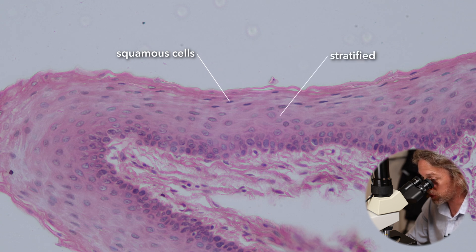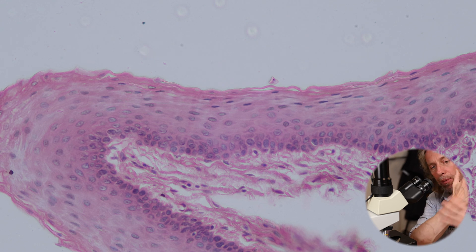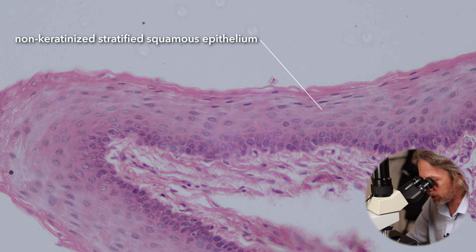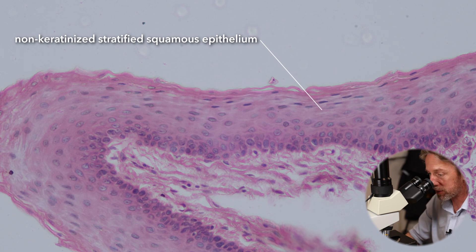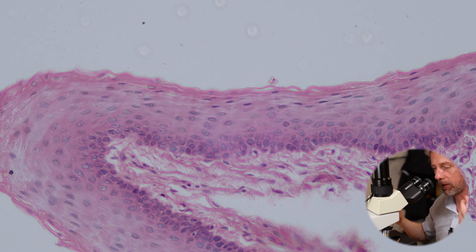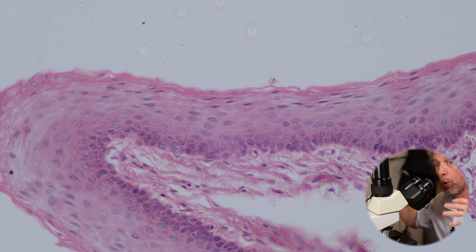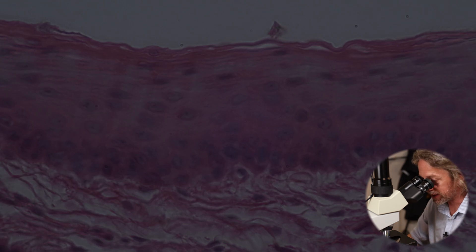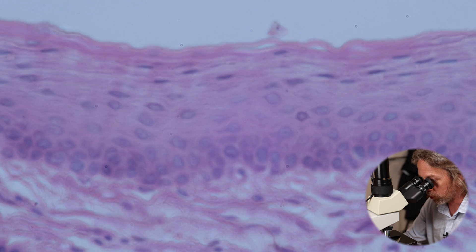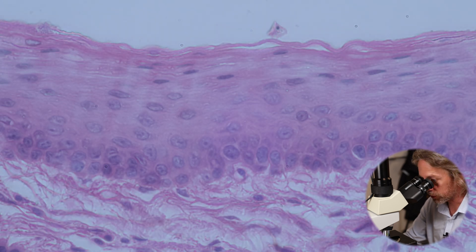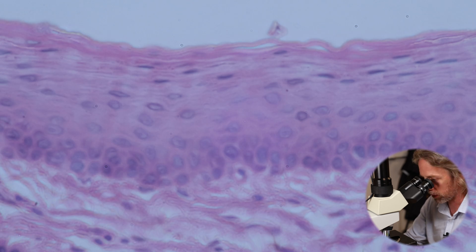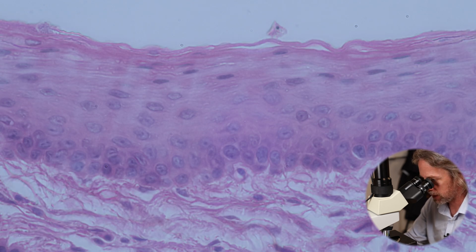These are squamous epithelial cells. There are multiple layers, so it's stratified, but it's not keratinized - the skin's epithelium is keratinized making it waterproof and tough, whereas this is a non-keratinized stratified squamous epithelium. Its purpose is protective: as we swallow food the bolus is potentially abrasive and will wear away cells next to the lumen. With multiple layers, as the cells closest to the lumen are worn away there are more layers beneath, and the basal layer - the purpley progenitor cells - continually makes new cells which rise toward the lumen.